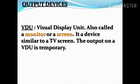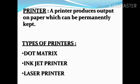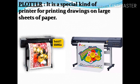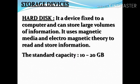The output devices: first, our well-known monitor or screen, which is nothing but a Visual Display Unit or VDU. Next, the printer — different types of printers are there, details of every printer will be in our printer-related lectures to be uploaded soon. The plotter is also an output device.